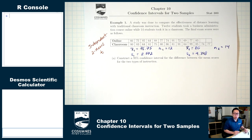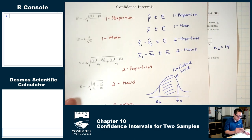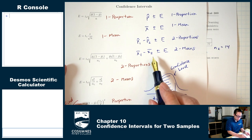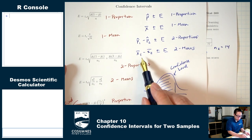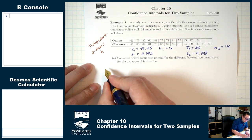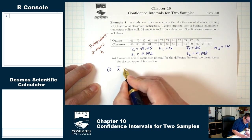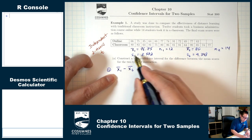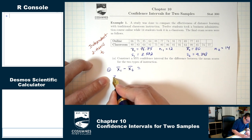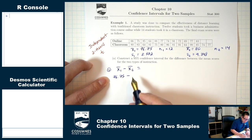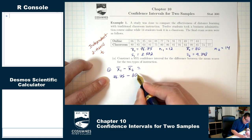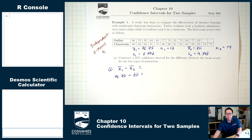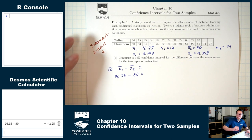This is a two means situation, so our final product should look like x-1-bar minus x-2-bar plus or minus the margin of error. The first thing I need to compute is x-1-bar minus x-2-bar. x-1-bar is 76.75 and x-2-bar is 80. So 76.75 minus 80 is negative 3.25.